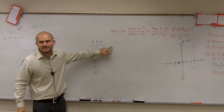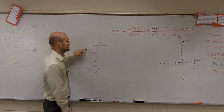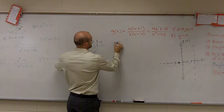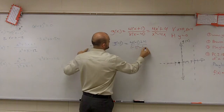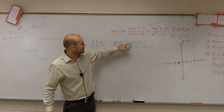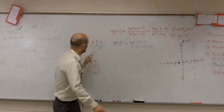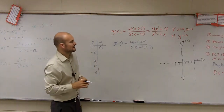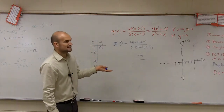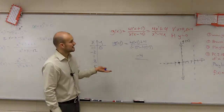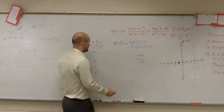Now I need to find the values of each one. If you have a calculator, you can go to your table function. If not, plug them all in. So g of negative 1 equals 4 times negative 1 plus 4, divided by negative 1 squared minus 4 times negative 1. That's negative 4 plus 4, which is 0 — we already knew that was the x-intercept. For negative 2: 4 times negative 2 is negative 8, plus 4 is negative 4. The denominator is negative 2 squared, which is 4, minus 4 times negative 2, which is positive 8. So 4 plus 8 is 12. That gives negative 4 divided by 12, which is negative one-third.